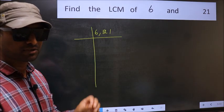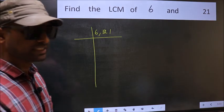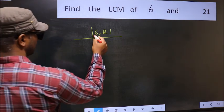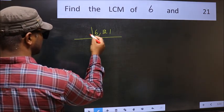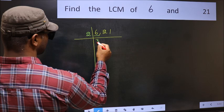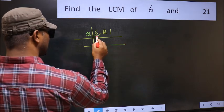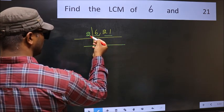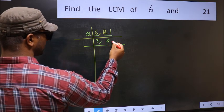Now you should focus on the first number, which is 6 here. 6 divided by 2 is 3. The other number 21 is not divisible by 2, so you write it down as it is.